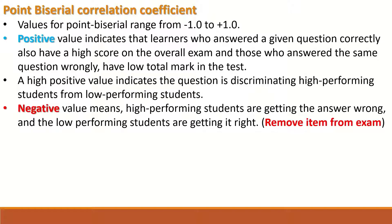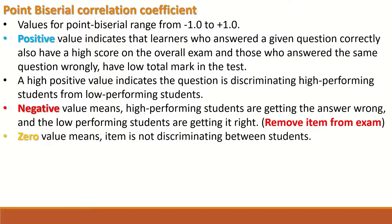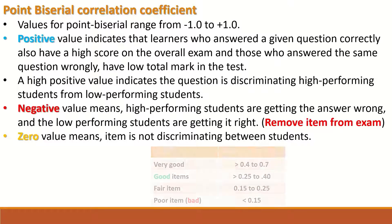A negative coefficient value means that high-performing students are getting the answer wrong and low-performing students are getting it right. In this case, the question should be removed from the exam paper. If the coefficient value is zero, the item is not discriminating between students at all, and it is worth changing or modifying it.